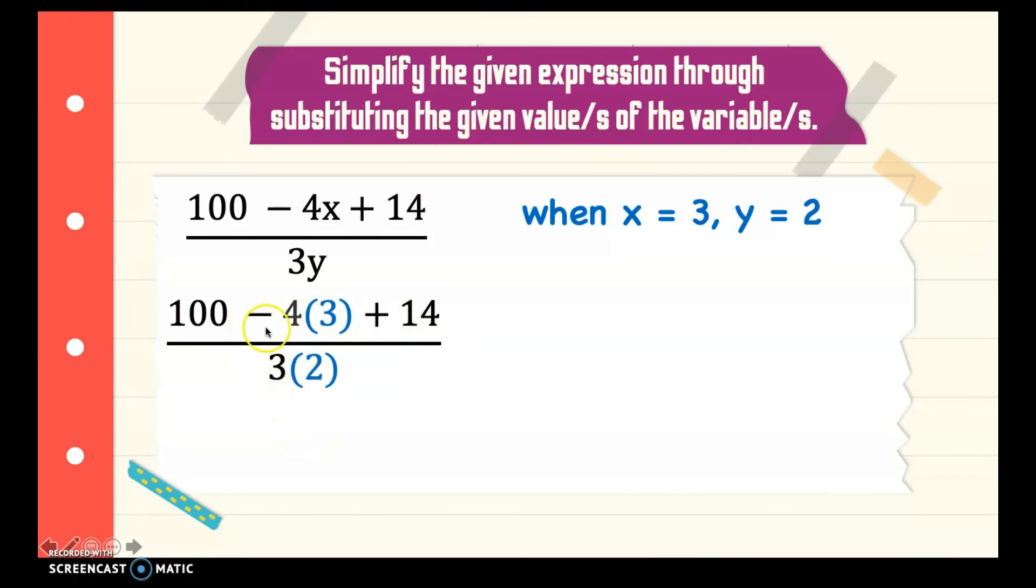We have 100 minus 12 is 12 plus 14 then 3 times 2 is 6. Then, you subtract first before you add 100 minus 12 is 88 then plus 14 then divide it to 6. You add first here 88 plus 14 that is 102 then 6, 102 divided by 6 is 17.